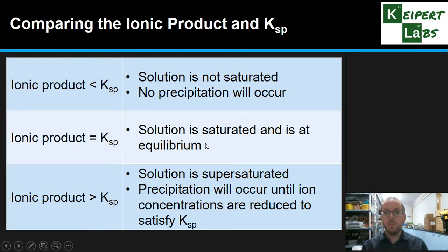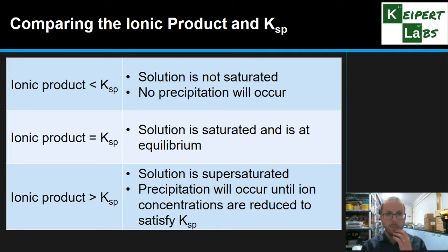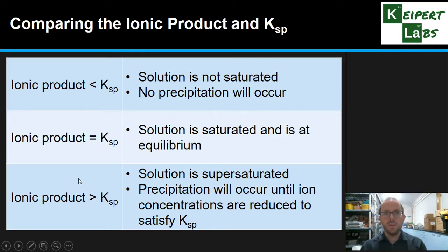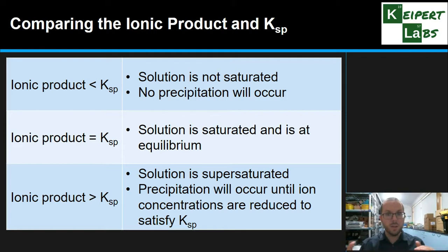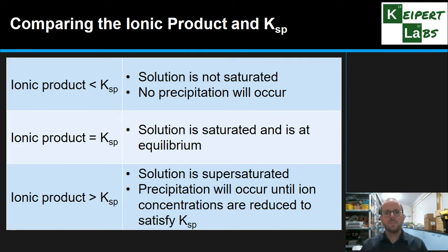If the ionic product is less than KSP, the solution is not saturated — no precipitation will occur. There are fewer ions in solution than needed to reach equilibrium, so more can dissolve. When the ionic product equals KSP, the solution is saturated, at equilibrium — no further precipitation or dissolving occurs. If the ionic product is greater than KSP, the solution is supersaturated with too much dissolved, and precipitation will occur until the ion concentrations drop back down to satisfy the KSP expression. If Q is too high we go backwards to reach K; if Q is too low we go forwards — the same logic applies here.